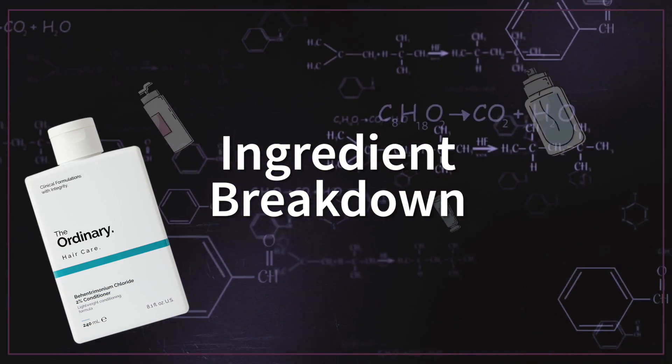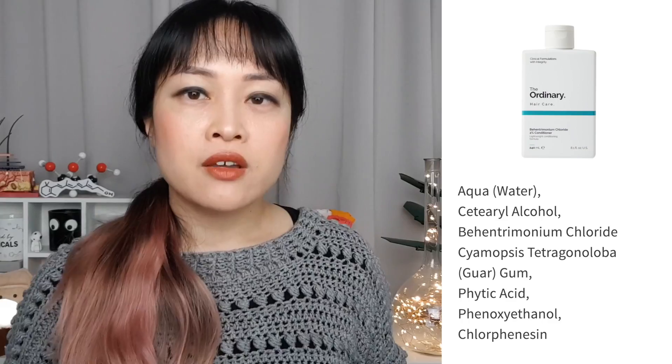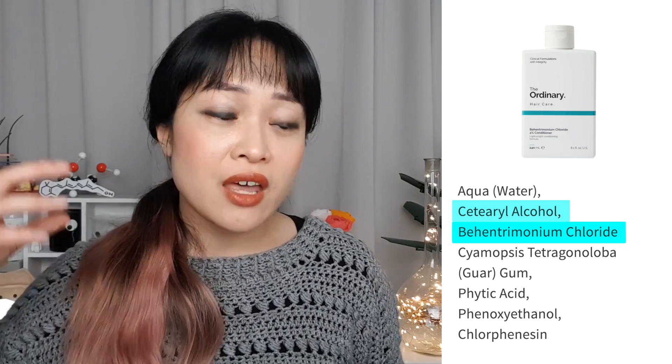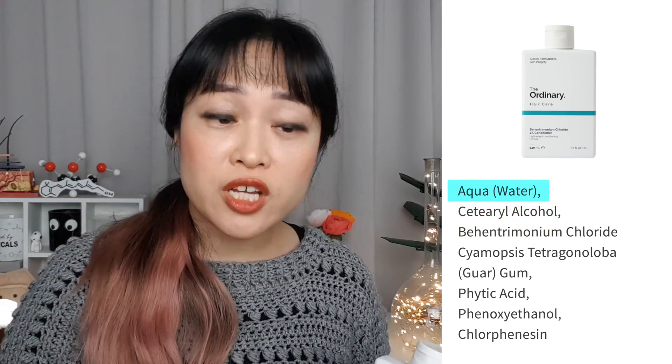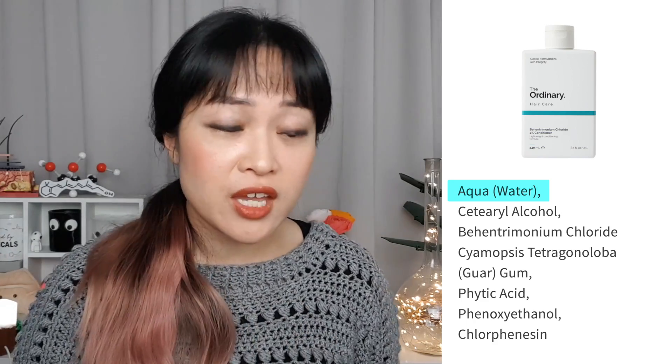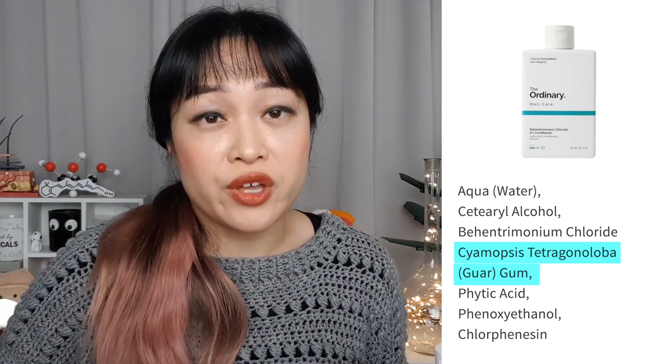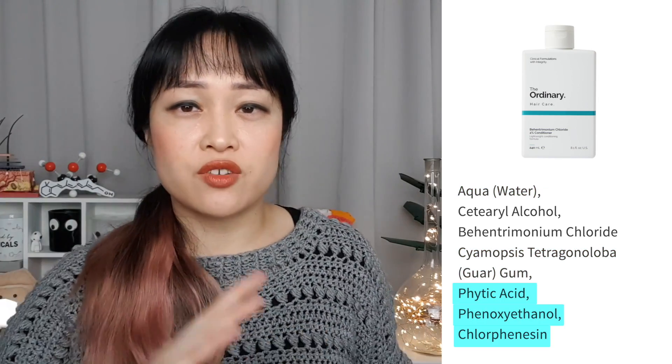These main ingredients are also why many people get breakouts on their back from conditioner — cationic surfactants are quite irritating and fatty alcohols are good at clogging pores. If you get back acne, make sure you scrub your back properly after using conditioner. The Ordinary's conditioner is again pretty simple — just seven ingredients: the cationic surfactant and fatty alcohol forming the conditioning film, water at the right concentration, guar gum to thicken the formula further, and preservatives to control bacteria and mold.